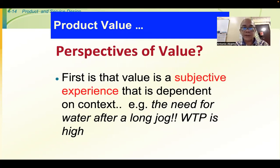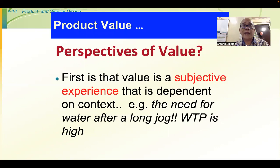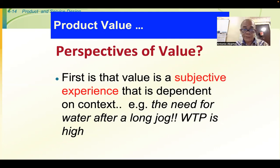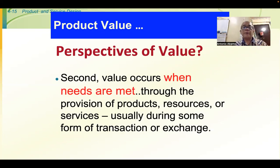Let's look at the perspectives of value. First, value is a subjective experience that is dependent on context. For example, the need for water after a long jog means your willingness to pay is very high because you are so thirsty; but if you are not that thirsty, your willingness to pay for a bottle of water is very low. The second perspective is that value occurs when needs are met — when you serve the needs of the market, usually during some form of transaction or exchange.